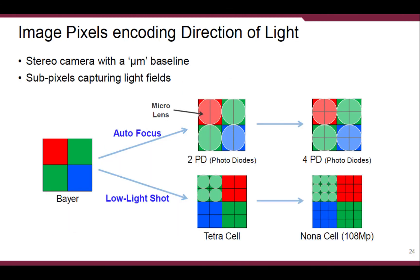You might have heard of the Bayer pattern — the RGB pattern. But there are other kinds of pixel arrangements. Samsung has image sensors with various pixel arrangements. For autofocus, we use a 2-PD sensor — PD meaning photodiode — where every sub-pixel has two photodiodes, so the 2-PD sensor produces left-and-right imaging, acting like a stereo camera with a micrometer-scale baseline. For low-light shots, tetra-cell and nona-cell are used. If we slightly modify the optical element, the tetra-cell can detect four directions of light and the nona-cell can detect nine directions, enabling light-field imaging.